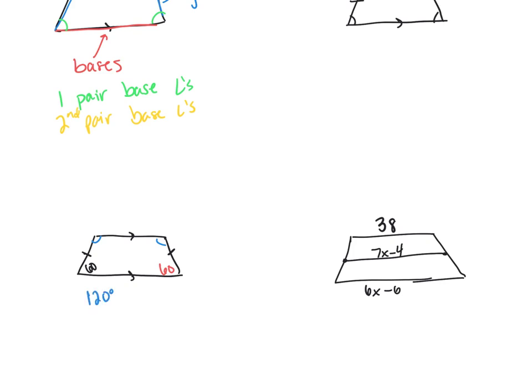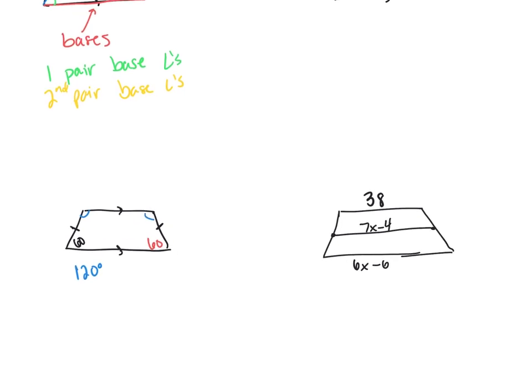And we also talked about one other property of trapezoids where the mid-segment is equal to half the sum of the bases. So remember, my mid-segment is the segment that connects the mid-points of the legs. So in this case, 7x minus 4, that segment there is my mid-segment.